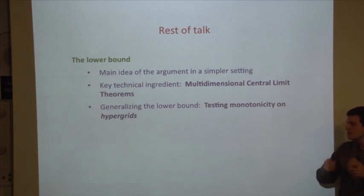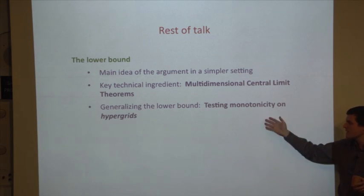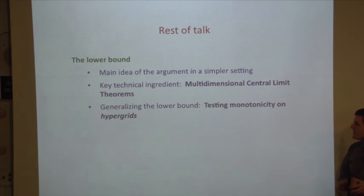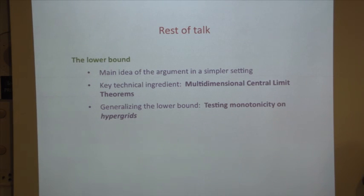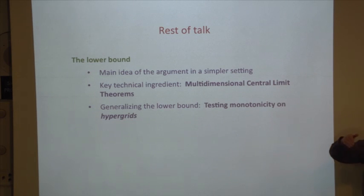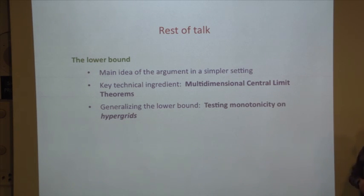Everything so far is about functions on the Boolean hypercube with domain {0,1}^n. But you can extend this: people in property testing also look at monotonicity on hypergrids, where the domain is {0, 1, 2, ..., M}^n. We can extend our lower bound to hypergrids as well, and I'll talk a little about that.